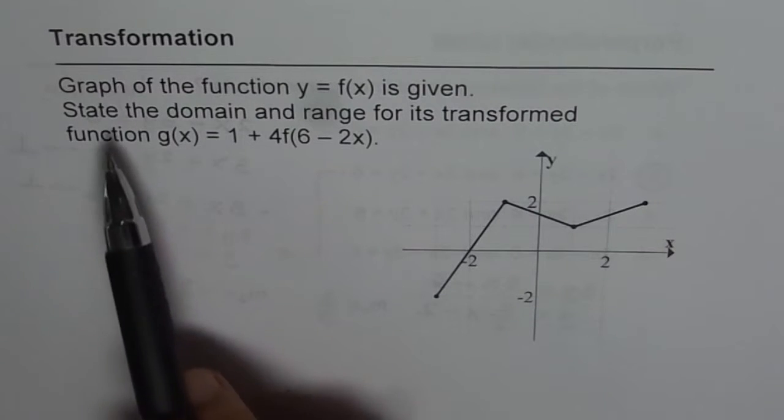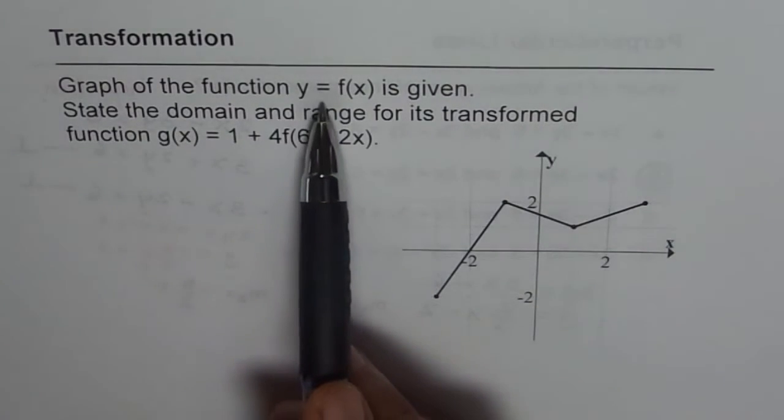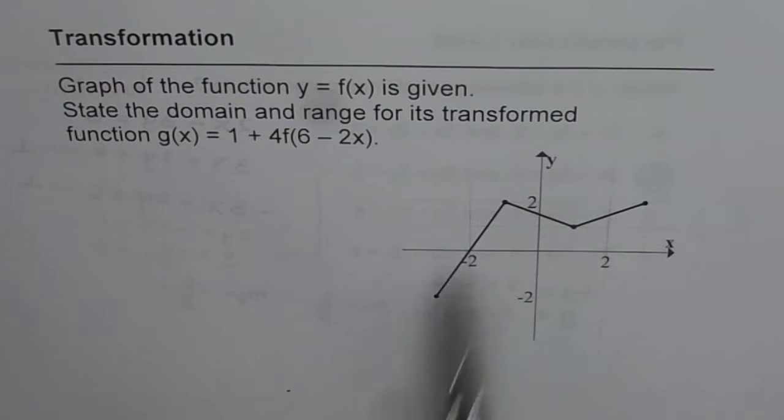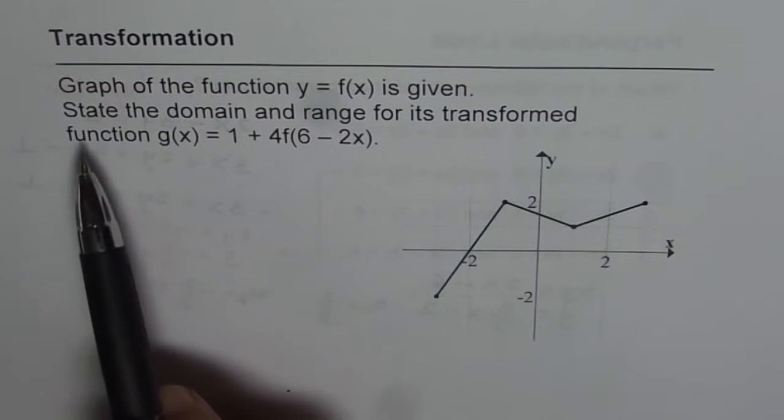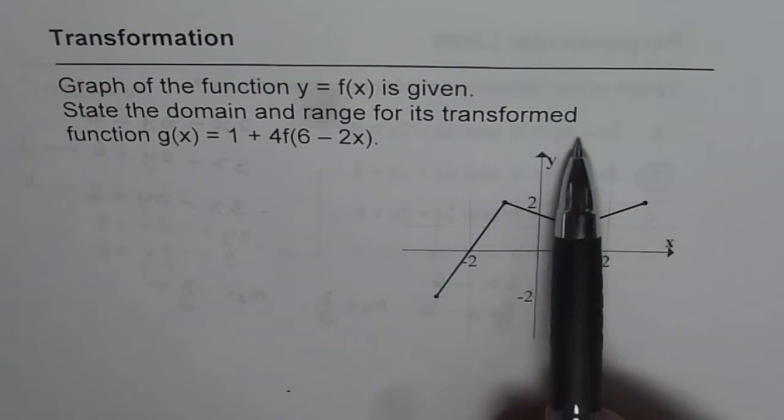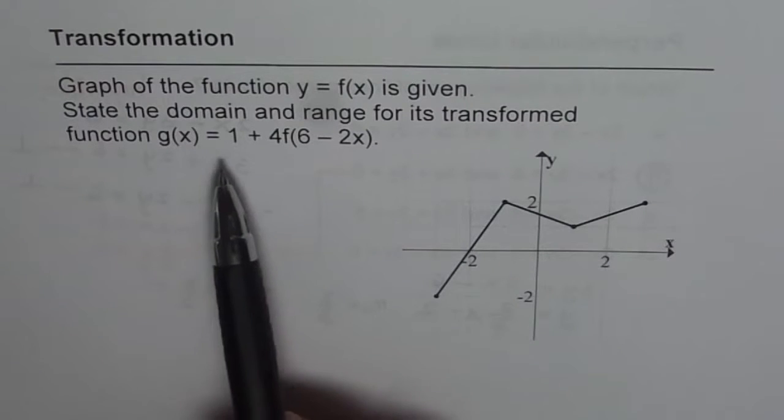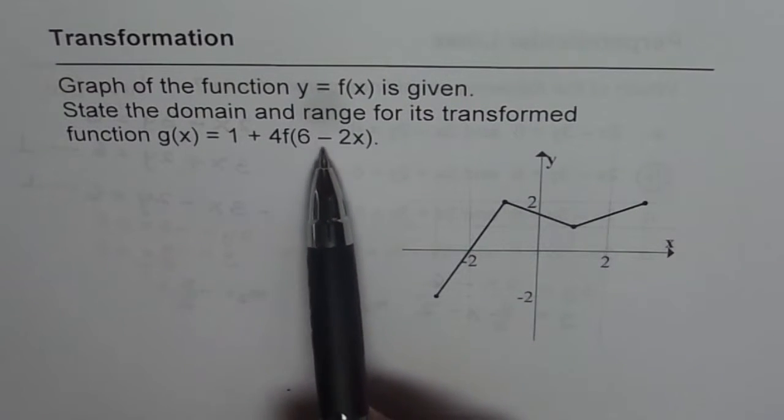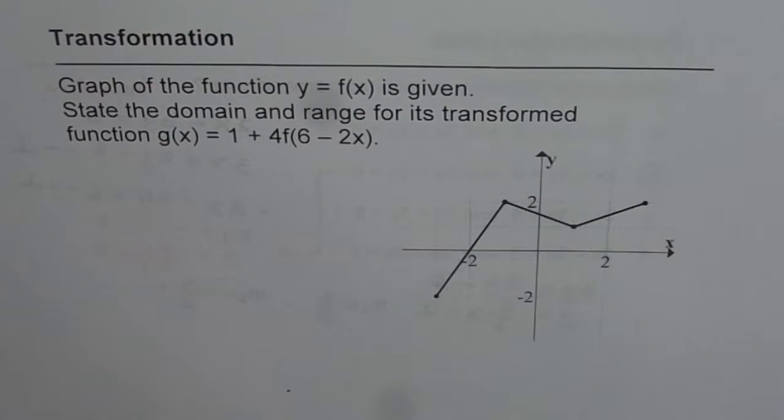The question here is: graph of the function y equals f(x) is given. So this is the graph of the function y equals f(x). State the domain and range for its transformed function g(x) which is 1 plus 4 times f(6 minus 2x). So that is the question.